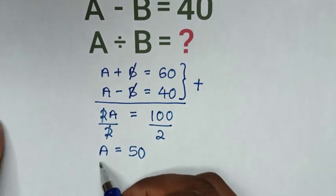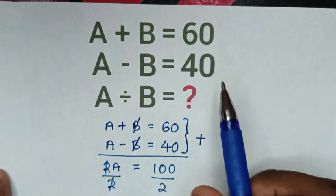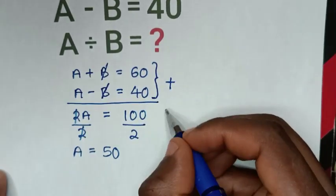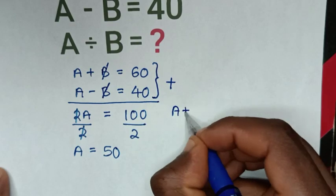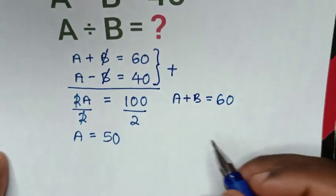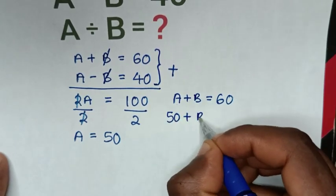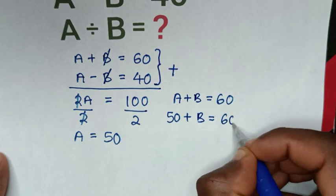To find B, we go back to the first equation, A plus B equals 60, and substitute A equals 50. So 50 plus B equals 60.